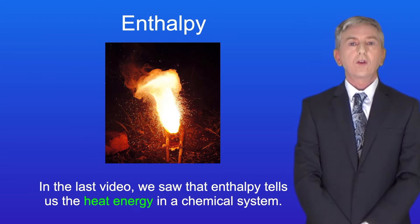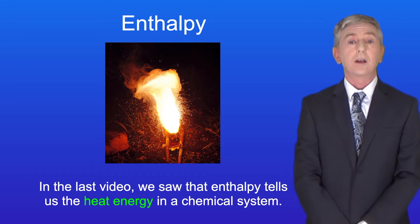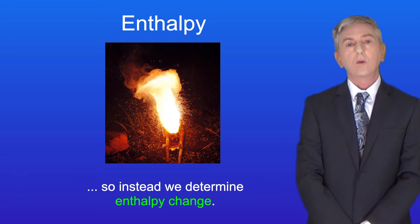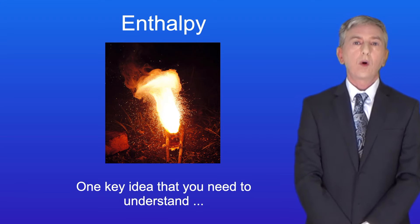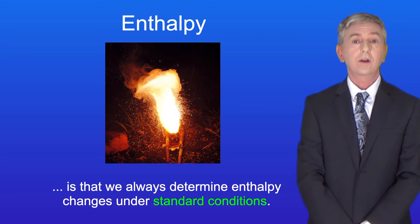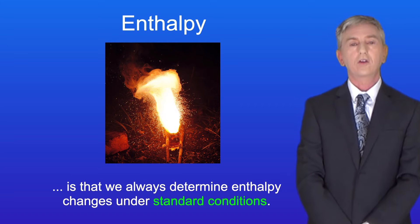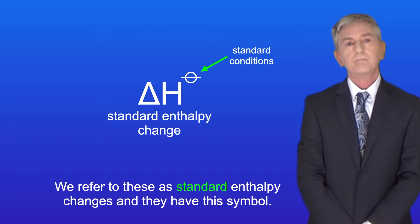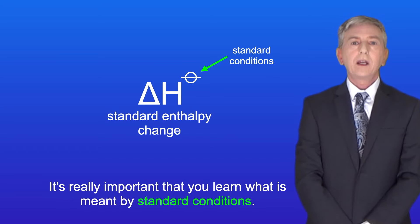In the last video, we saw that enthalpy tells us the heat energy in a chemical system. However, measuring enthalpy is extremely difficult, so instead we determine enthalpy change. One key idea you need to understand is that we always determine enthalpy changes under standard conditions. We refer to these as standard enthalpy changes, and they have this symbol. It's really important that you learn what's meant by standard conditions.